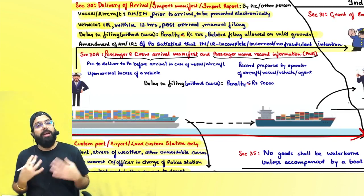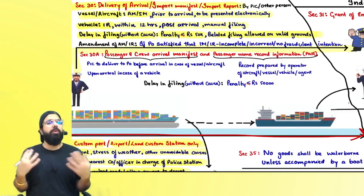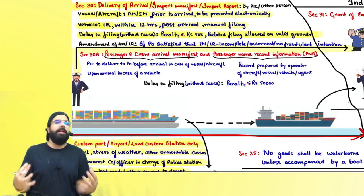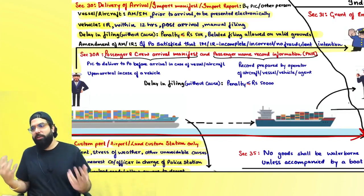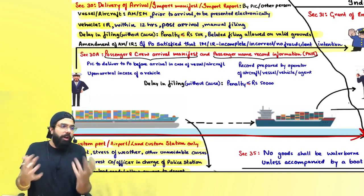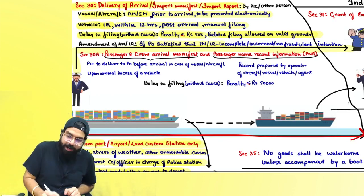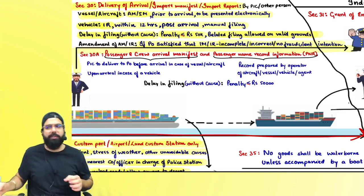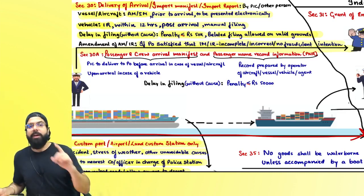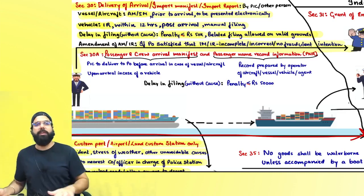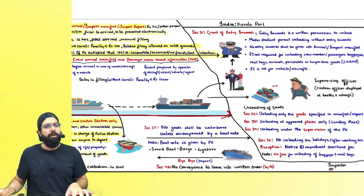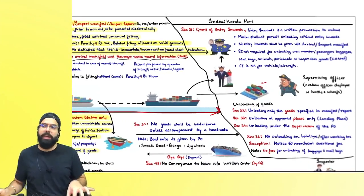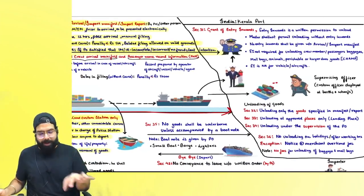If you want to make any amendment in the import manifest or import report, the proper officer must be satisfied that the manifest is incomplete or incorrect and that there is no fraudulent intention — only then will the officer allow the amendment.